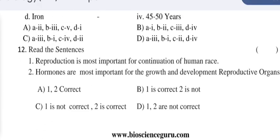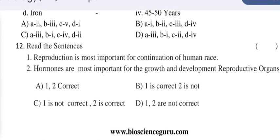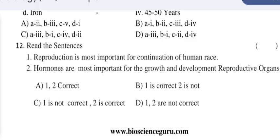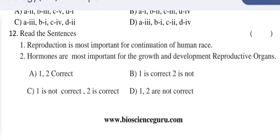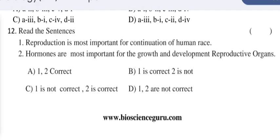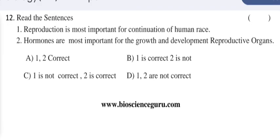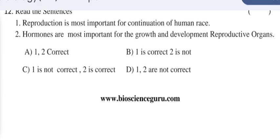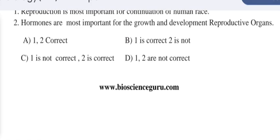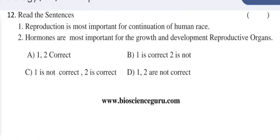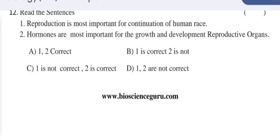Read these sentences: Number one — reproduction is most important for the continuation of the human race. Number two — hormones are most important for the growth and development of reproductive organs. Options: both one and two are correct; one is correct, two is not; one is not correct, two is correct; neither one nor two is correct. This question paper is given for 20 marks.